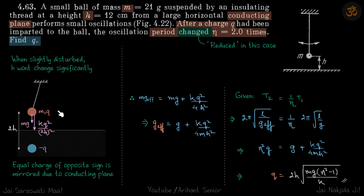Since both the forces are constant, we can write that this gives g effective to be this. Now it is given that the second time period t2 is 1 by eta times t1. As discussed, it's reduced, so it will be t1 by eta.